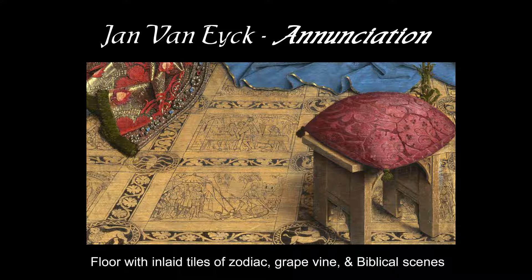When you look at the floor you'll see the zodiac and Old Testament scenes. The floor is inlaid with a grapevine design as a border, and roundels with different zodiac signs — the crab, Leo the lion — and in the rectangles between them, scenes from the Bible. Here we see Samson pulling down the building to kill the Philistines, and below that David cutting off the head of Goliath — evil being defeated by good.